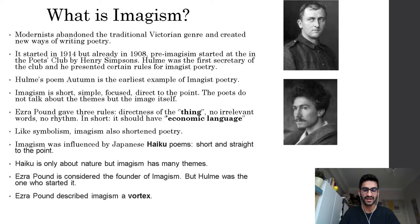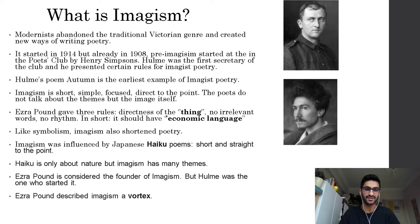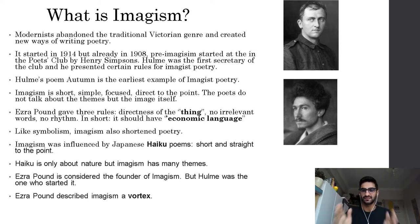So what is imagism? In short, it is focused, simple, and very direct — to the point. The poets do not talk about themes in an abstract way but focus on the image itself. They give the central idea directly and that's all — they don't try to over-describe it.